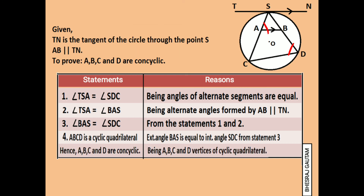Hence, we can conclude that points A, B, C and D are concyclic points, as four concyclic points in a circle always form a cyclic quadrilateral, from statement 4.